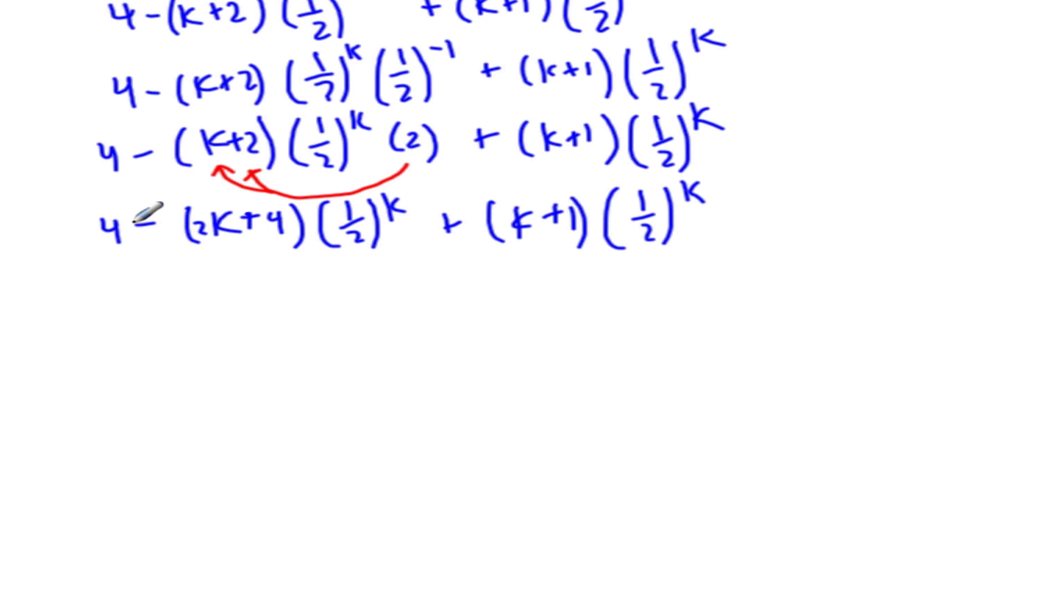Okay, so the mistake that I made is this negative. I was treating this negative as if it was distributing to this positive as well. So when I factored out a 1 half k, I was actually, I wrote a big parentheses, and I was actually treating as if that negative goes to this second term over here. And it doesn't. It just goes to this term. So what I did to fix it, I just distributed the negative into these two terms here.